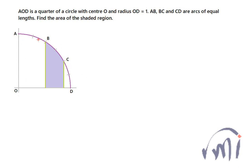I have a drawing where AOD is a quarter of a circle with center O and radius OD equal to 1. AB, BC, and CD are arcs of equal length, and we have to find the area of the shaded region.